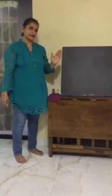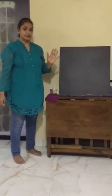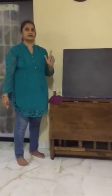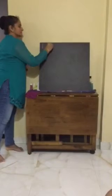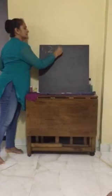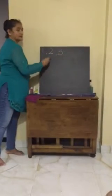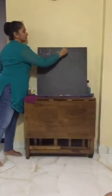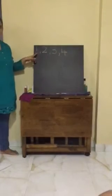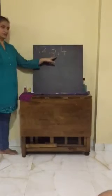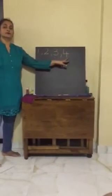Hi children, once again. Now we have learnt so many numbers till now. We have learnt number 1, and after 1, which number comes? Number 2. After 2, which number? Number 3. And after number 3, number 4. So 1, 2, 3 and 4.